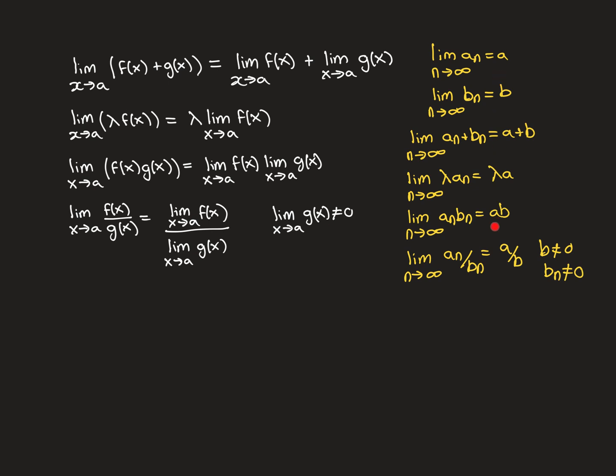To remind you about the algebra of limits for sequences: we assume two convergent sequences a_n and b_n with limits a and b respectively. If you add them together, the limit is the sum of the limits. If you multiply all terms by a fixed real number lambda, the limit is lambda times the original limit. If you multiply the two sequences together term-by-term, the limit of the new sequence is a times b — the product of the two limits.